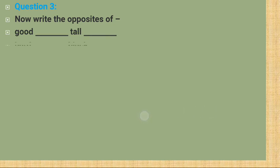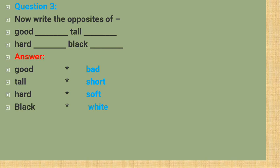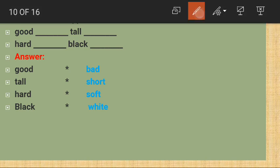Now write the opposite words. Good → bad (B-A-D); tall → short (S-H-O-R-T); hard → soft (S-O-F-T); black → white. Ek baar dubara: good–bad, tall–short, hard–soft, black–white. Kuch aur opposite words: low → high; huge → tiny; kind → cruel — cruel matlab jo dayalu na ho, jo bahut zyada zalim ho.